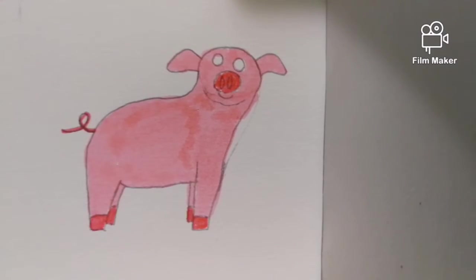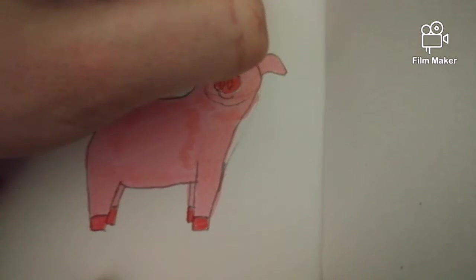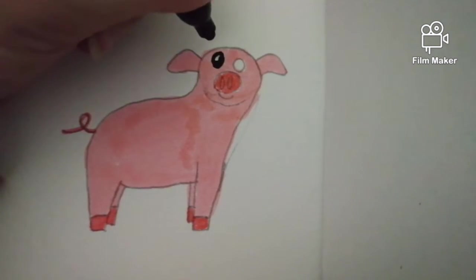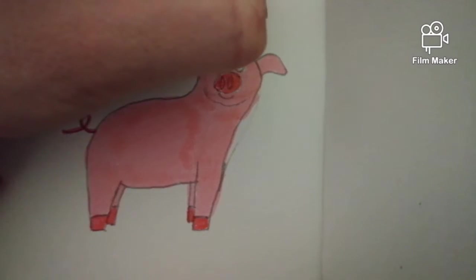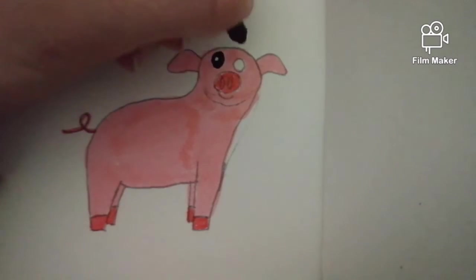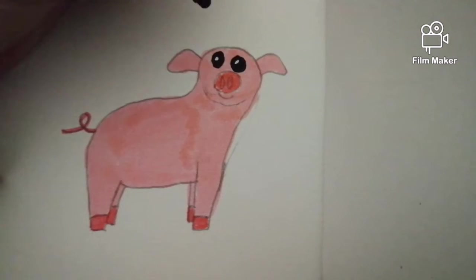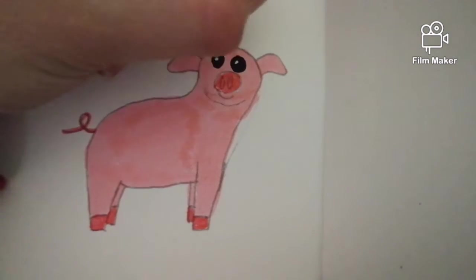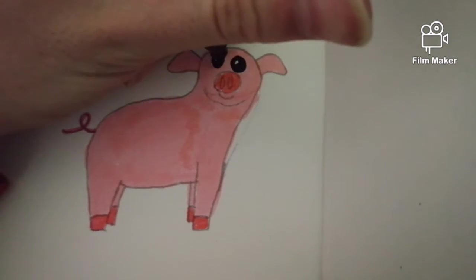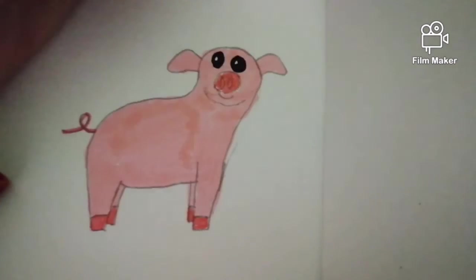Next, you're going to take a sharpie and you're going to do the eyes now. So we're just going to go around the eyes with the sharpie and then fill in most of them, except we're going to leave a little white mark to add some reflection. We have to make sure that the white mark is at the same spot on both sides so it looks like it's not cross-eyed.